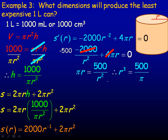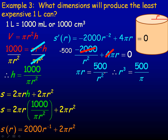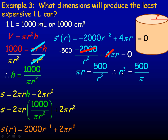Cross-multiplying, r² × r gives r³, and the π divides out, so we get r³ = 500/π. To find r, take the cube root of 500/π. Computing 500 divided by π and then taking the cube root gives r ≈ 5.42 centimeters.